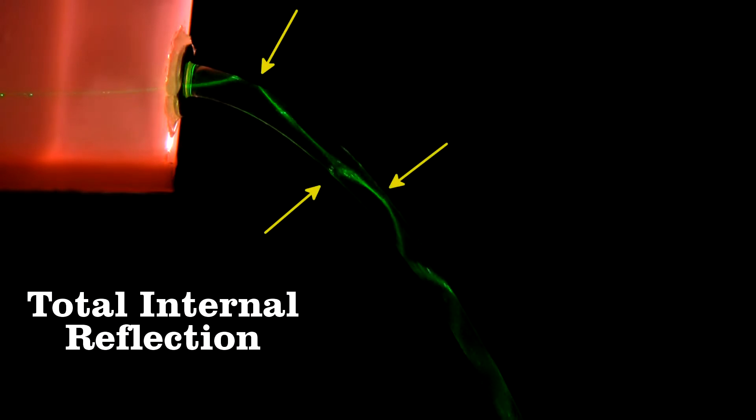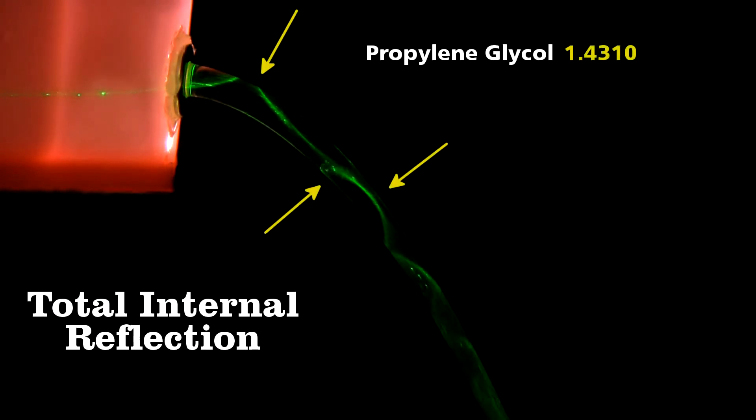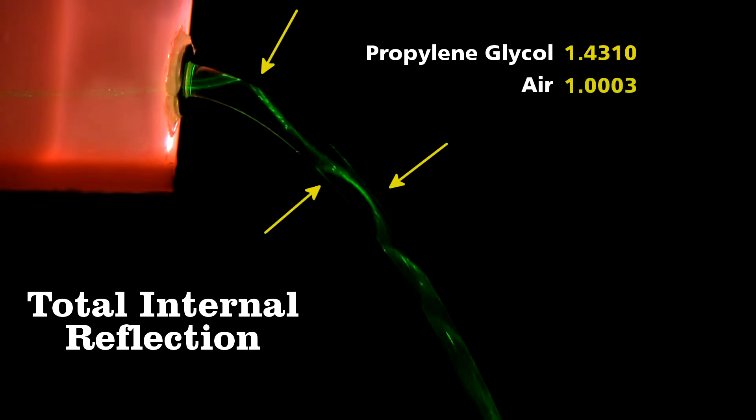You can see here the first reflection, and then the second, and the third. This occurs because there's a difference between the index of refraction of the guide material, here propylene glycol, and the outside, air in this case.